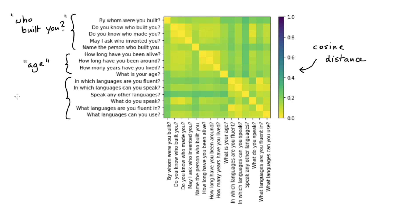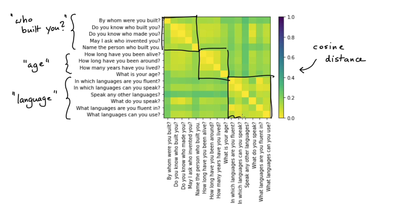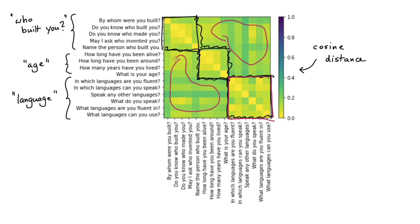We then have a couple of questions about the age of the assistant, and next a couple about the language. If these were proper sentence embeddings I would expect there to be a cluster here, another one here, and a final one here. There is some clustering happening — if I squint a little I feel confident that this over here looks like a cluster — but I'm still seeing a little too much similarity. So as far as sentence embeddings go, adding or averaging word embeddings has limits.